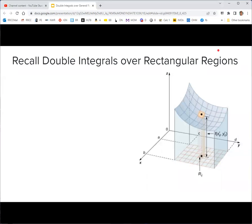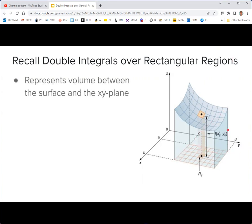We'll do a quick review of double integrals over rectangular regions, which was covered in the last video. Our domain is a rectangle where x goes from A to B and y goes from C to D. The double integral over this region represents the volume between the surface, a floating sheet up in space, and the xy-plane. This volume is shaded here.